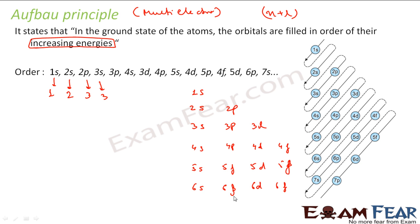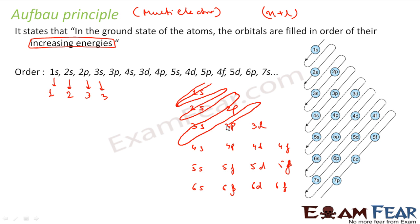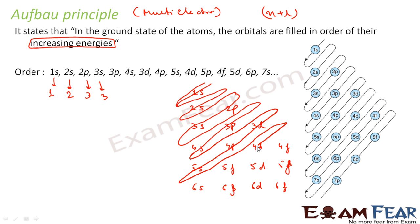You start with 1s, then draw diagonal arrows through the table. Following the arrows: 1s → 2s → 2p, 3s → 3p, 4s → 3d, 4p, 5s → 4d, 5p, 6s, and so on. This diagonal arrow method gives exactly the same ordering shown in the standard Aufbau diagram, and the logic is that lower energy orbitals are filled first.